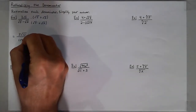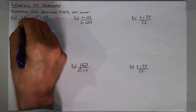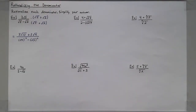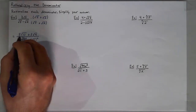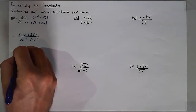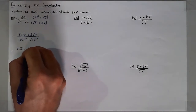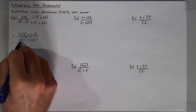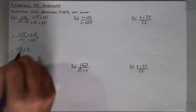Plus 3 times the square root of 2 times the square root of 2, which is the square root of 4, which we know is 2. So I will now have 3 square roots of 10 plus 3 times 2, which is 6, all over 5 — because the square root cancels with the square — minus 2.